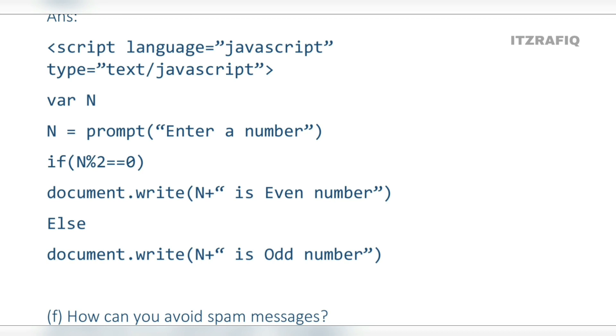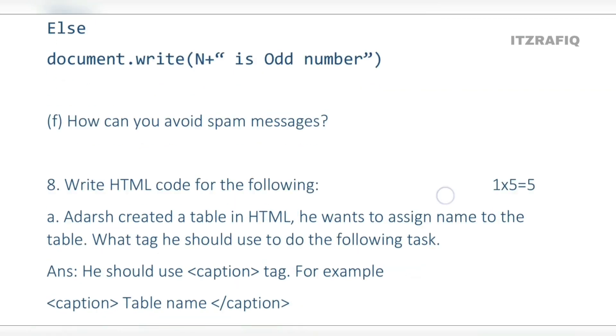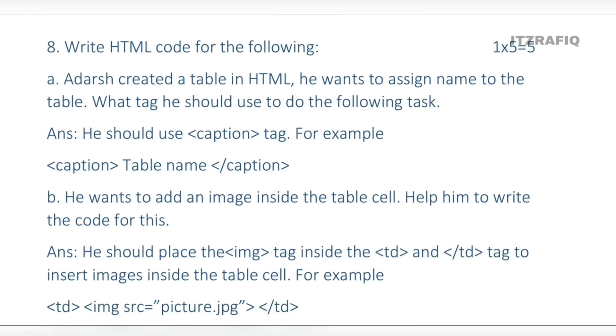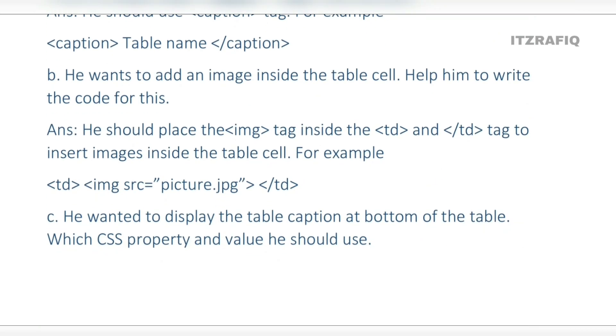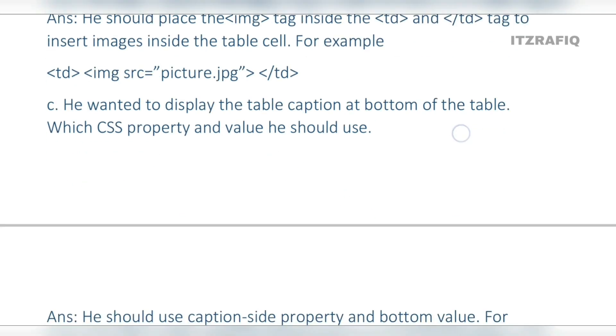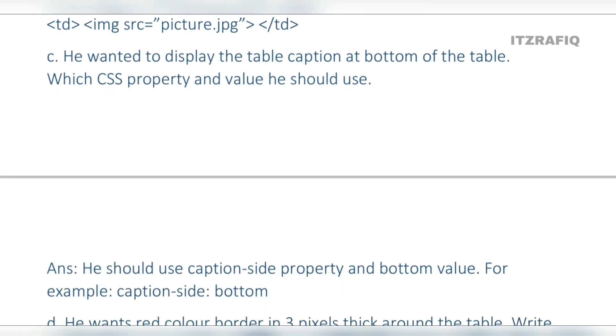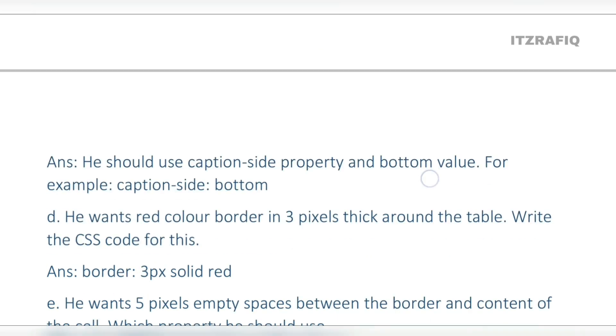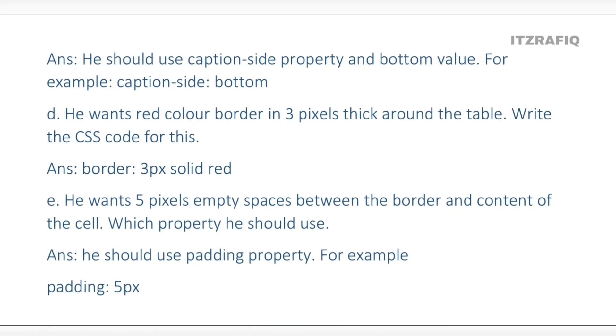Question 8 - write appropriate MySQL queries and table styling. He should use caption tag, for example: opening caption, table name, closing caption. He should write the image tag inside td tags. Number C: he should use caption-side property, for example caption-side colon bottom. Number D: border 3px solid red. Number E: padding property, for example padding colon 5px.